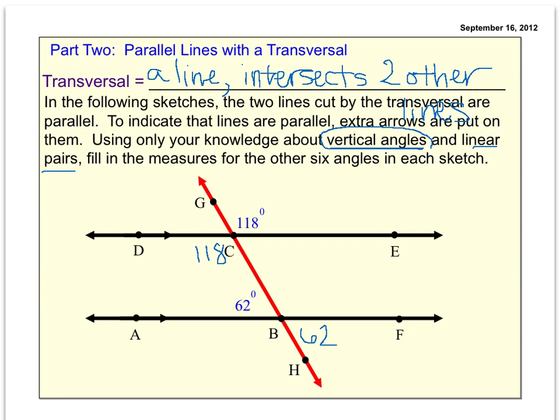So let's think about it. A linear pair being supplementary, that means they add up to 180. So if you do 180 minus 118, you get 62 degrees. So anything that's a linear pair with 118 is also going to be 62.